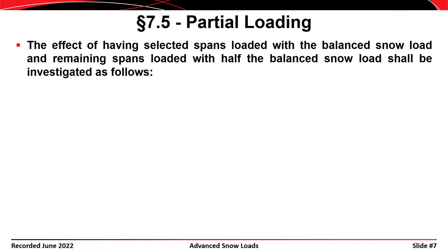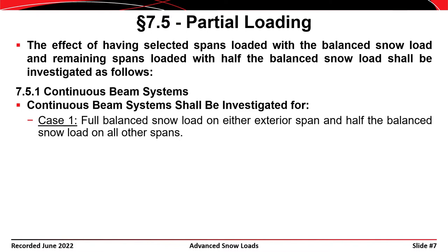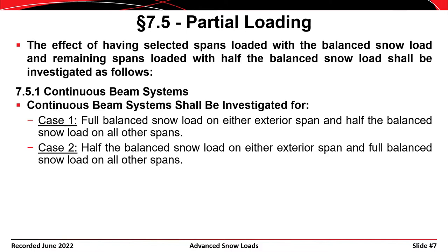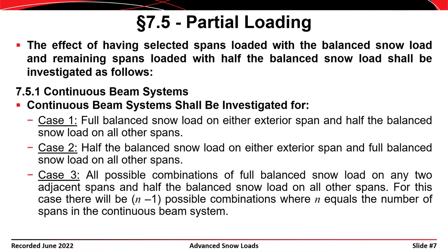The ASCE 7 standard states that the effect of having selected spans loaded with a balanced snow load and the remaining spans loaded with half the balanced snow load shall be investigated. We have three cases. Case one is the full balanced snow load on either the exterior span and half the balanced snow load on all other spans. Case two is half the balanced snow load on either the exterior span and the full balanced snow load on the other spans. Case three considers all possible combinations of full balanced snow load on any two adjacent spans and half the balanced snow load on all other spans. For case three, there will be N minus one possible combinations, where N is the number of spans in the continuous beam system.